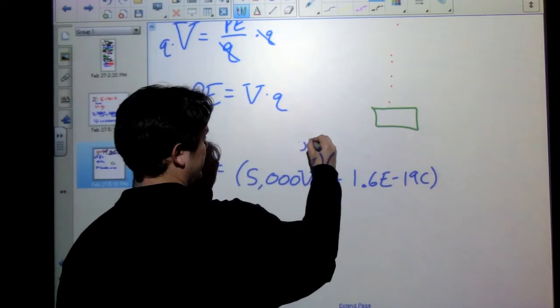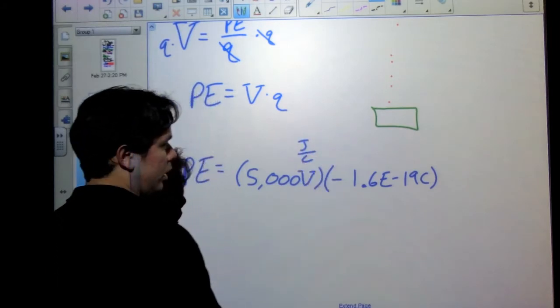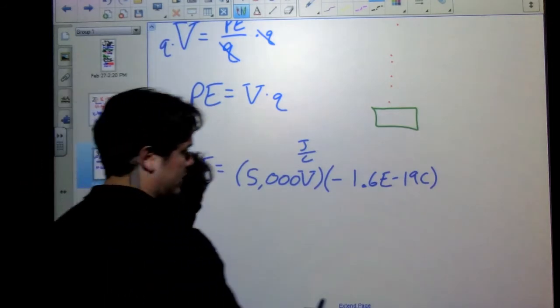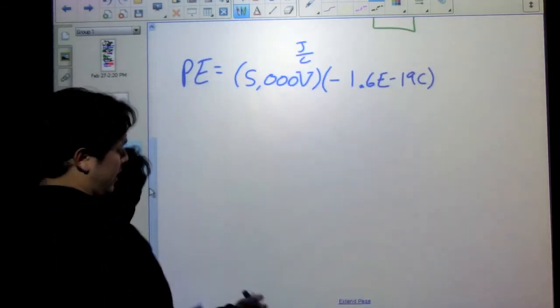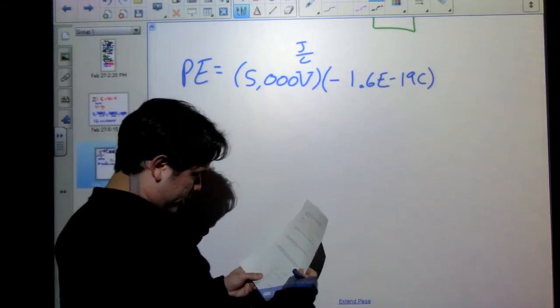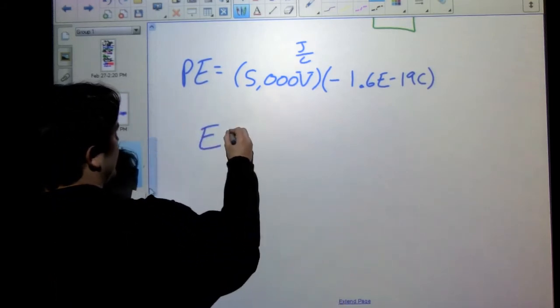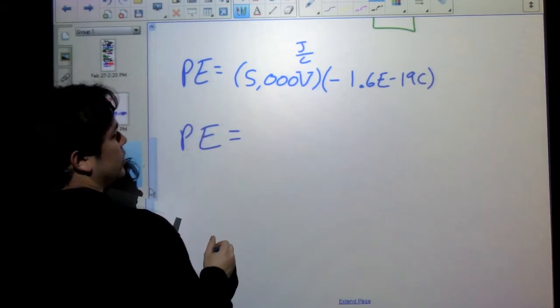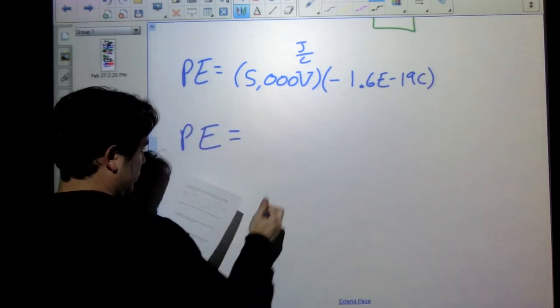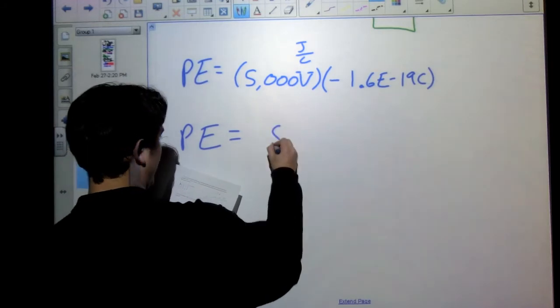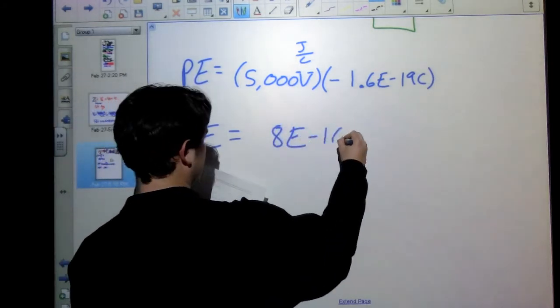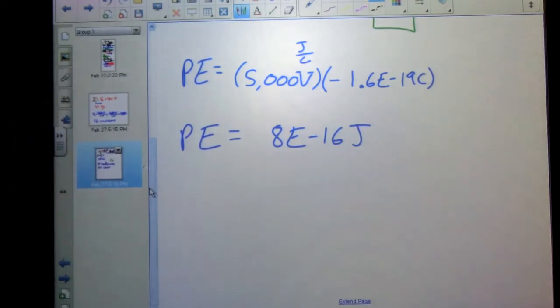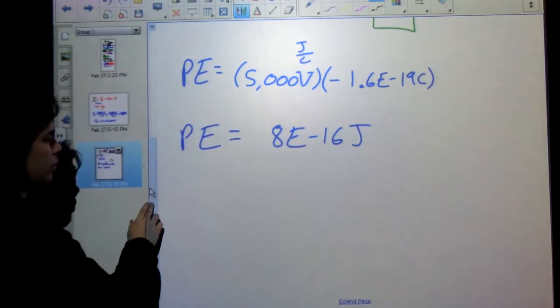Now, remember, a volt is also a joule per Coulomb. And so our Coulombs will cancel out. We'll be left with joules, which is what energy is in, which is great. So we can find that our potential energy, and I'm going to mark that as PE so we don't get confused with an electric field, is going to be equal to 8 times 10 to the negative 16th joules. A very small amount of joules. But we'll see how that can still be a big deal with what we're dealing with.